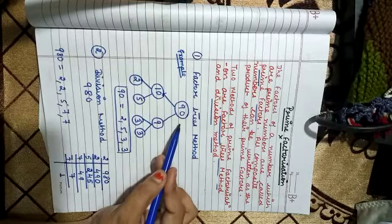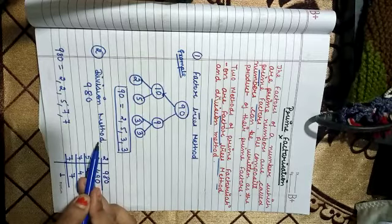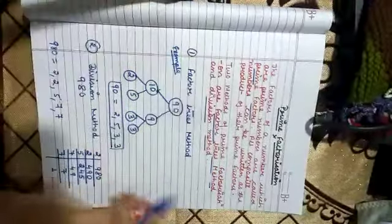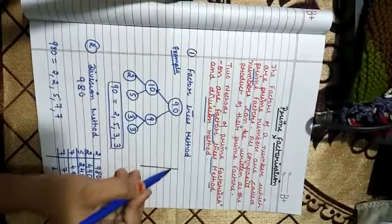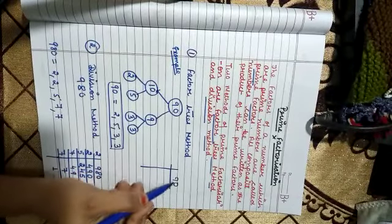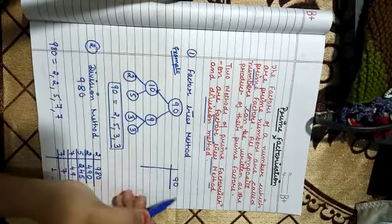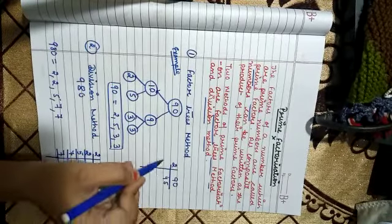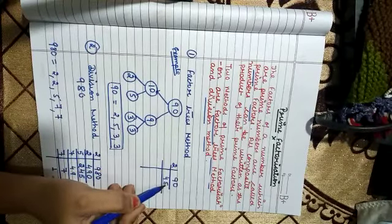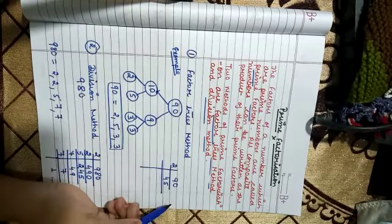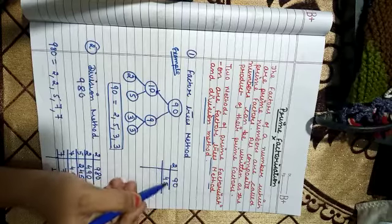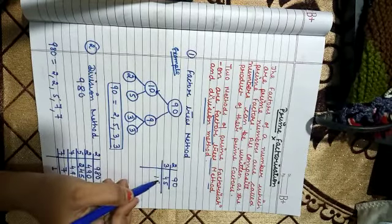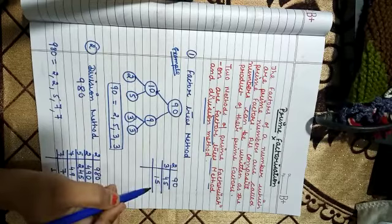So see, 980 ki factors, prime factors, this is 2, 2, 5, 7, 7. Now jo humne factor tree method se ki hai, isko bhi hum division method se solve kar sakte hai. See how. Here you will write 90 and divide it 2 se. Isko divide karo. 2 fours are 8, and 2 fives are 10. 5, 4, 9. It is divisible by 3. So 3 se karenge. 3. And this one is 15.